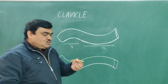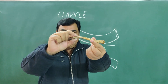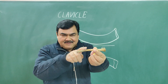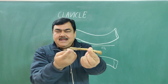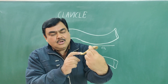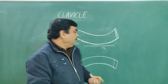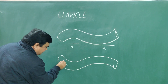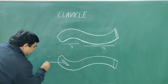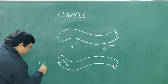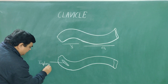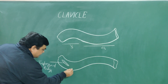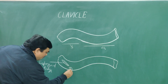The lateral part is flat and has two surfaces: this is the superior surface and this is the inferior surface. The superior surface is smooth and subcutaneous. The inferior surface has two landmarks: a ridge and a tubercle. This is the conoid tubercle.